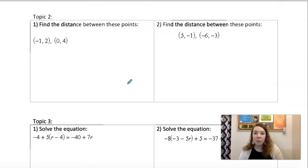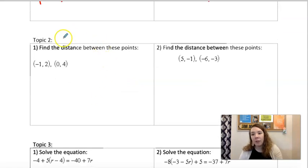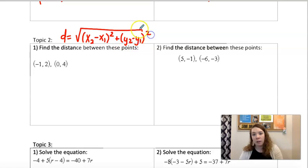On distance between two points, we have a distance formula. And this comes from Pythagorean theorem. But we will take our x's and subtract, square that, and add it to our y's that we subtract and square. This comes from Pythagorean Theorem, so if you like that better, you can use that also.